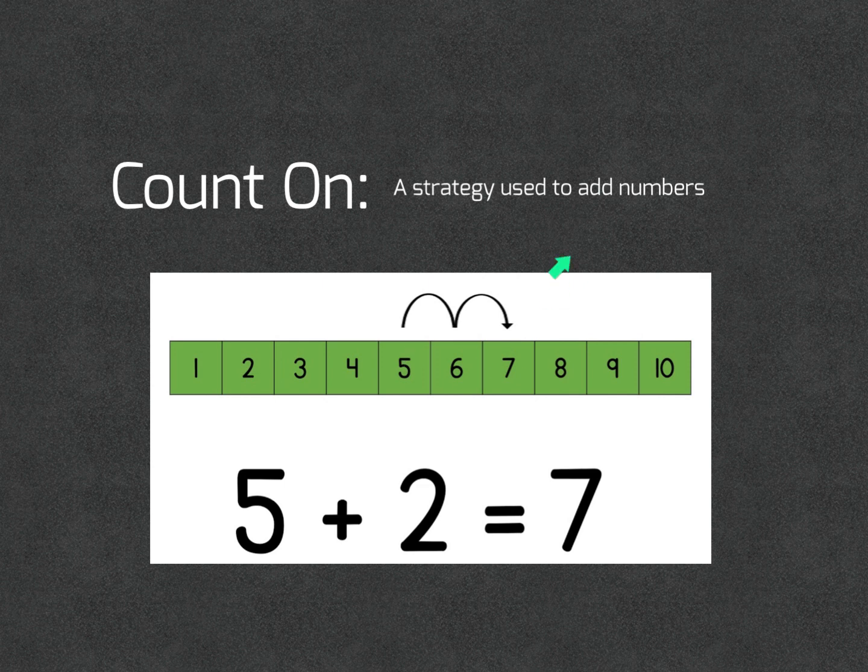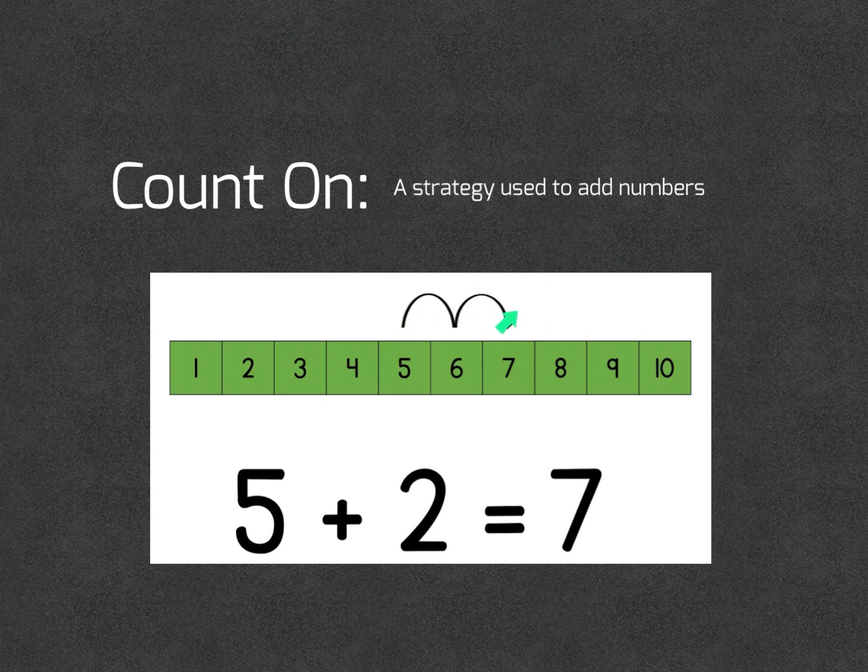When you look at these bumps right here, you start with five, add two bumps, one, two, and you get seven. Because five plus one is six, plus one is seven.